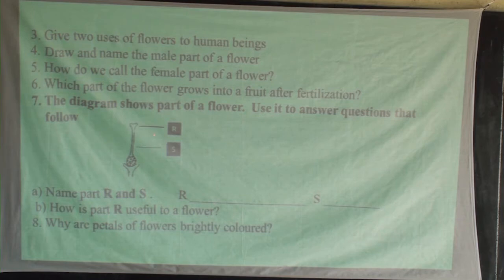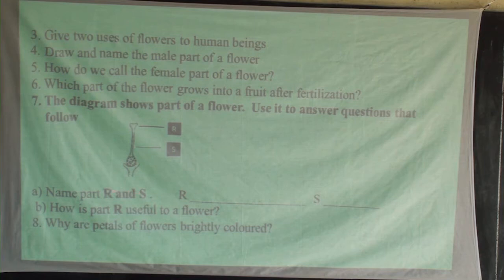You can also do number seven. You are given a diagram that shows part of a flower to answer questions — the pistil and the stamen. You are asked to answer parts R and S, check on the functions of parts R and S, and name part S and its functions.